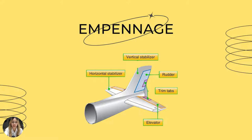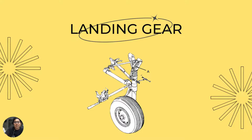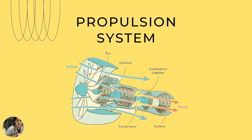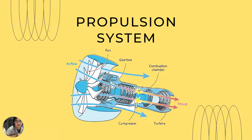Third, the empennage is the part that provides stability during flight by using a rudder in the vertical stabilizer and an elevator in the horizontal stabilizer. Fourth, landing gear is used to support the aircraft when parked and to absorb shock when landing. The last part is the propulsion system, used to provide engine thrust and auto-generate tasks.